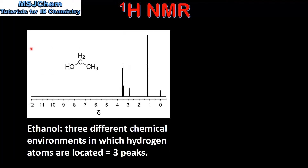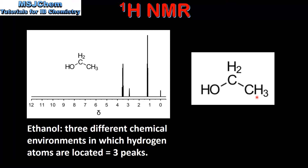In our last example we look at the NMR spectrum for ethanol. Ethanol has three different chemical environments in which hydrogen atoms are located, therefore it shows three peaks on its NMR spectrum. Ethanol has one CH3 group, one CH2 group, and an OH group. The hydrogen atoms in the CH3 group and the CH2 group are in different chemical environments. The hydrogen atom bonded to an oxygen in a hydroxyl group is also in a different chemical environment. So this means that we have three different chemical environments in which hydrogen atoms are located and we see three peaks on the NMR spectrum.